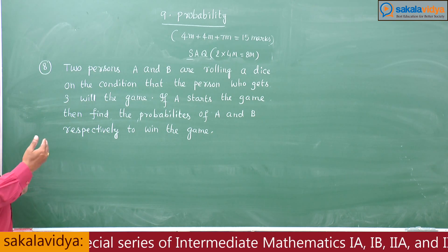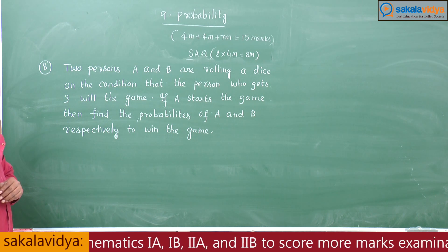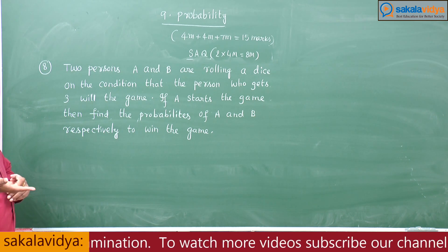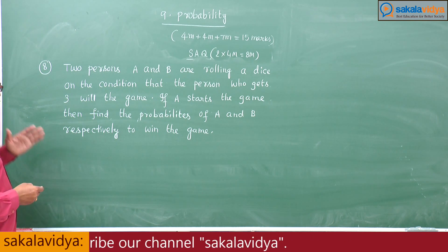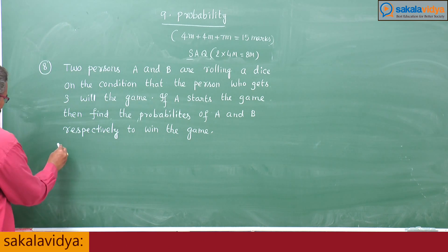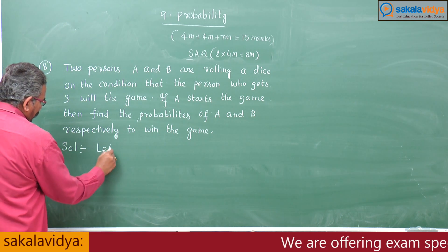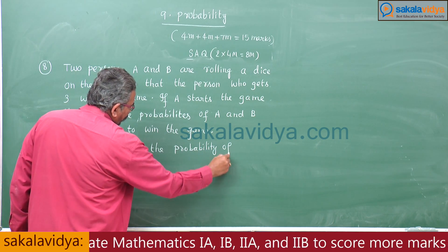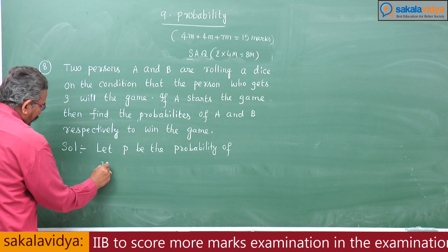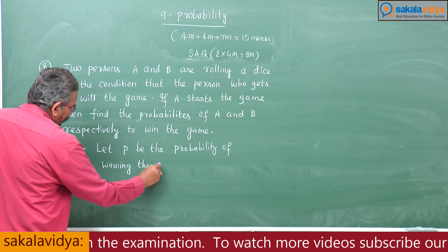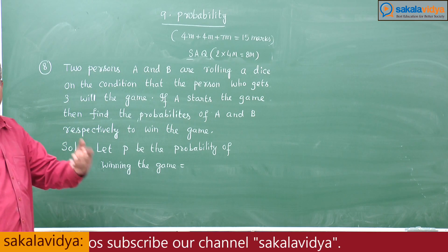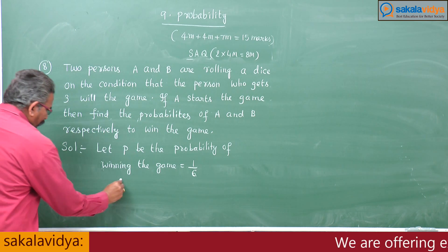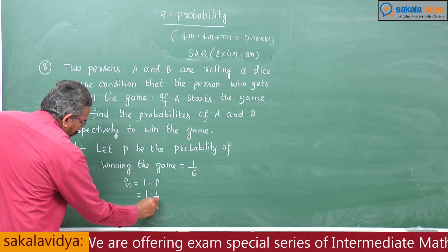What is the probability of getting three when a dice is rolled? Out of 6, only one case is possible, so that is 1 by 6. The probability of failure Q is 1 minus 1 by 6, that is 5 by 6. Let P be the probability of winning the game — P equals 1 by 6 and Q equals 5 by 6.